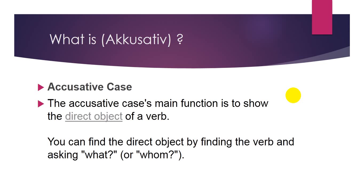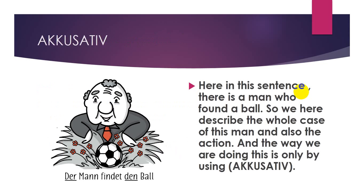In this sentence there is a man who found a ball. We describe the whole case of this man, the action, using the accusative. The sentence is: 'der Mann findet den Ball.' 'Der Mann' is nominative because the article is 'der,' but 'Ball' has the article 'den,' and the article 'den' is in the accusative form.